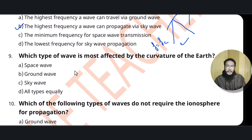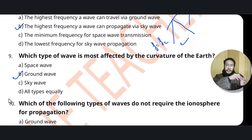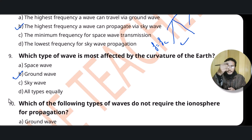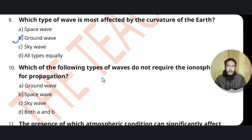Question nine: which wave type is most affected by the curvature of the Earth? It will be the ground wave, because ground waves travel along the contour of the earth — they follow the curvature of the earth, as discussed in question number one.